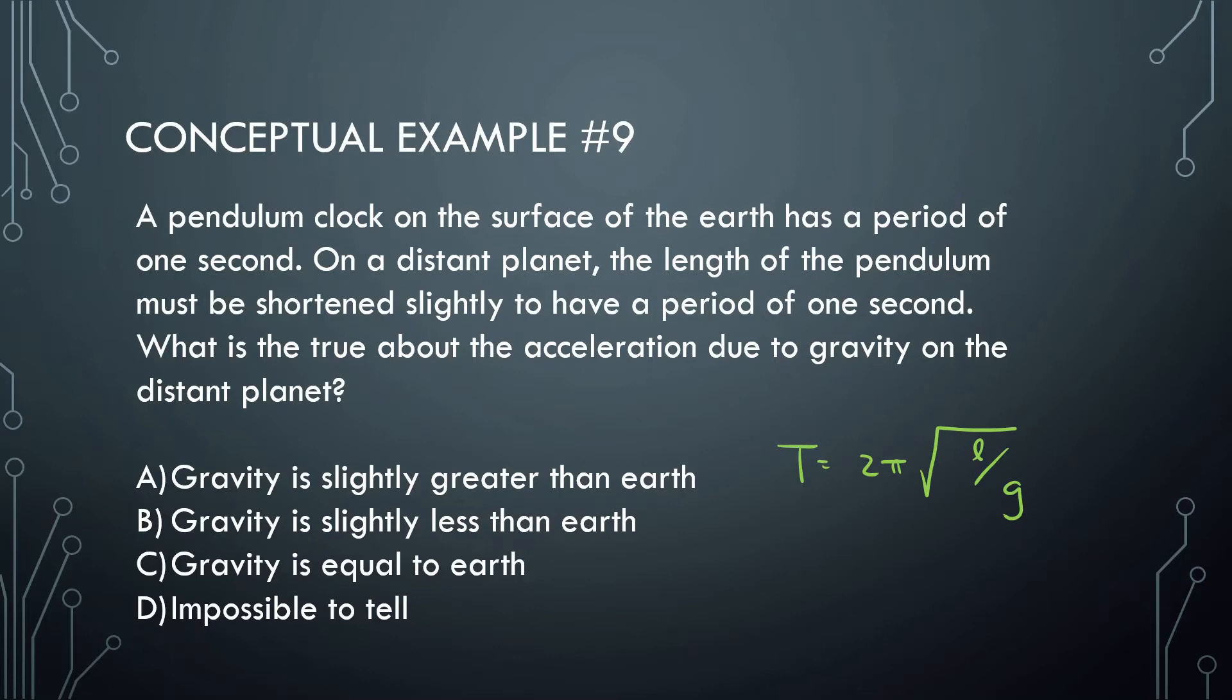We have period is equal to 2π square root of the length divided by gravity. We know this period is going to remain the same. The length of the string gets shortened at this distant planet, so this lowers, but the period remains the same. In order for this period to remain the same and this length to decrease, that means that the gravity has to decrease proportionally. These two have to decrease the same amount. So gravity in this distant planet should be slightly less than Earth.